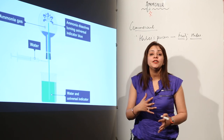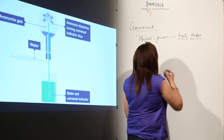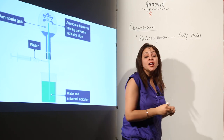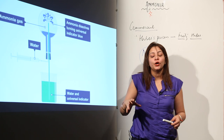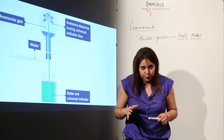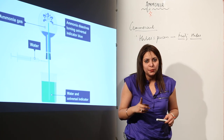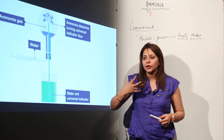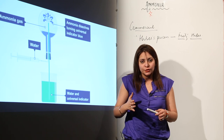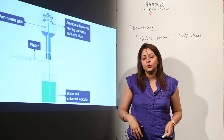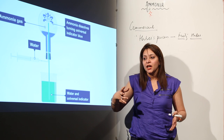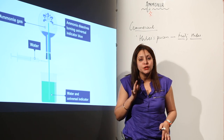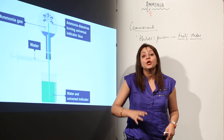If we talk about dry ammonia, that means ammonia which does not contain any moisture. It is neither acidic nor basic — it is neutral in nature. I'm talking about dry ammonia, not moist ammonia or ammonia solution. So if you have dry ammonia and pour it into litmus solution, nothing is going to happen because dry ammonia is neutral in nature.